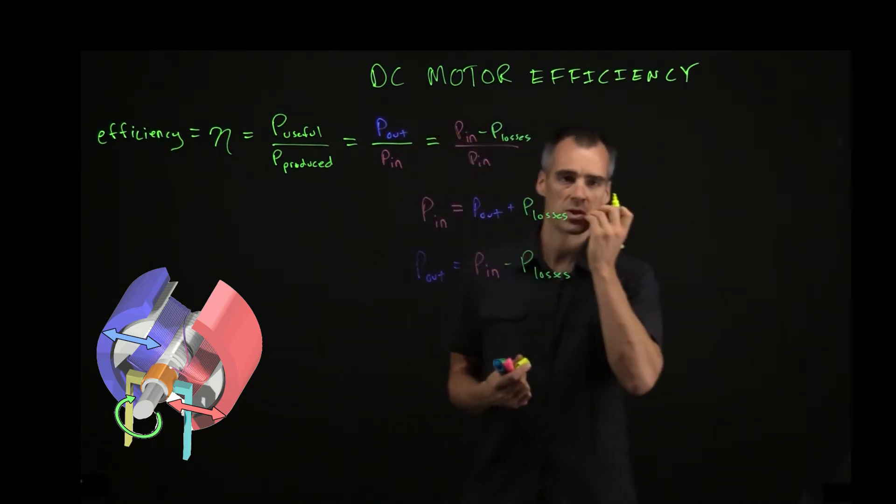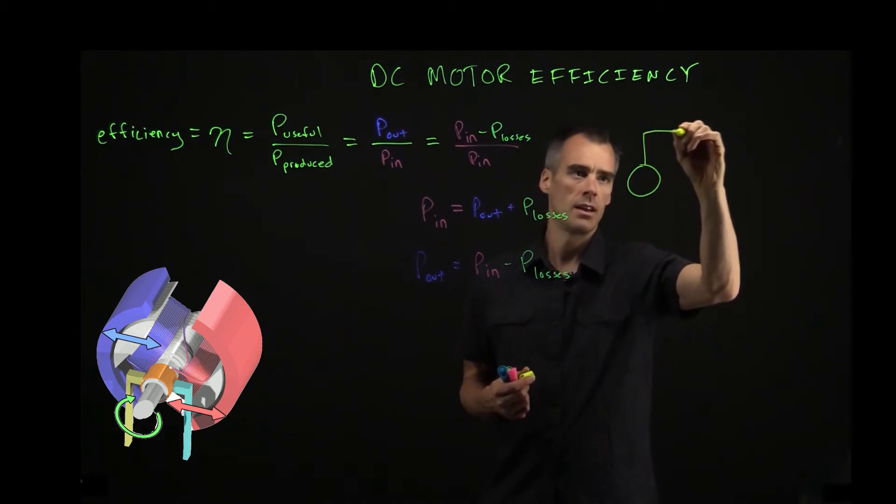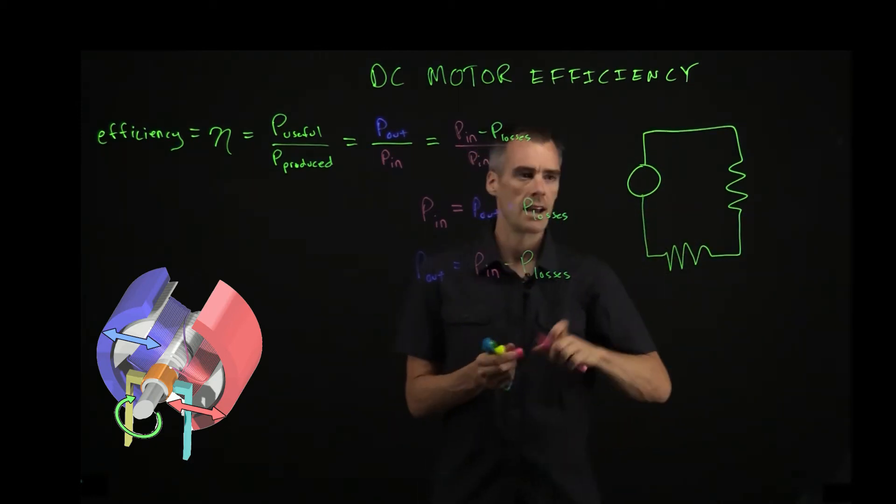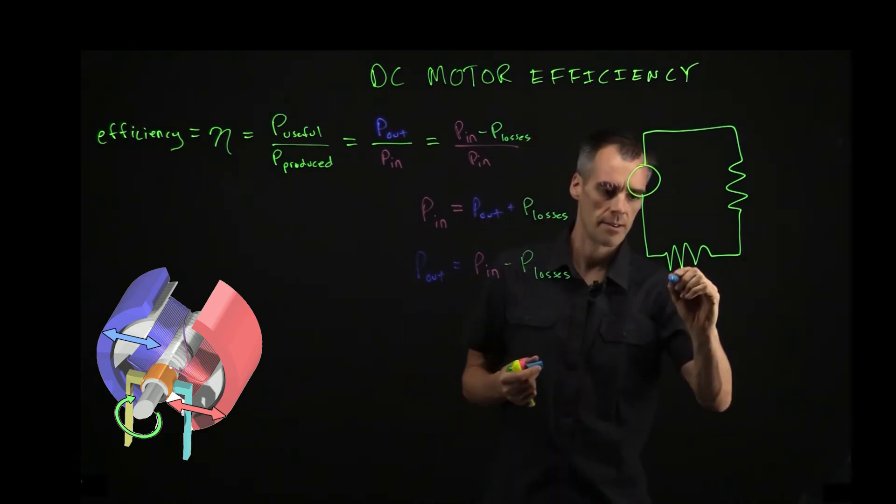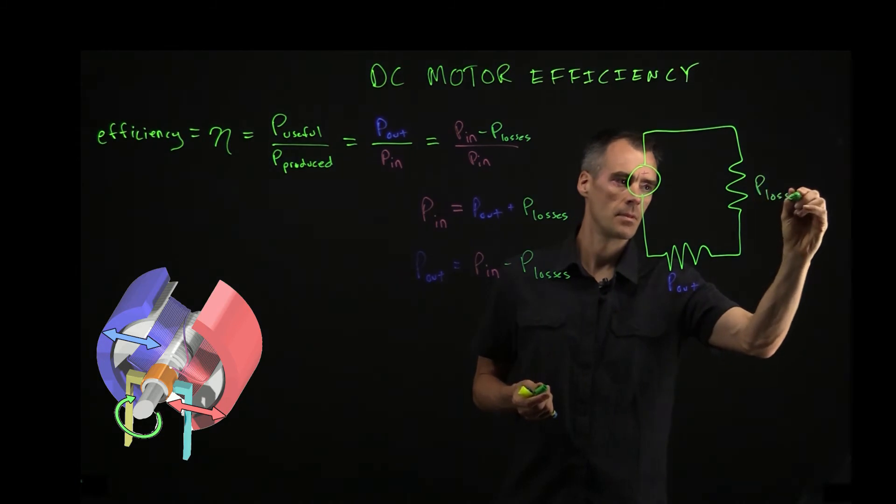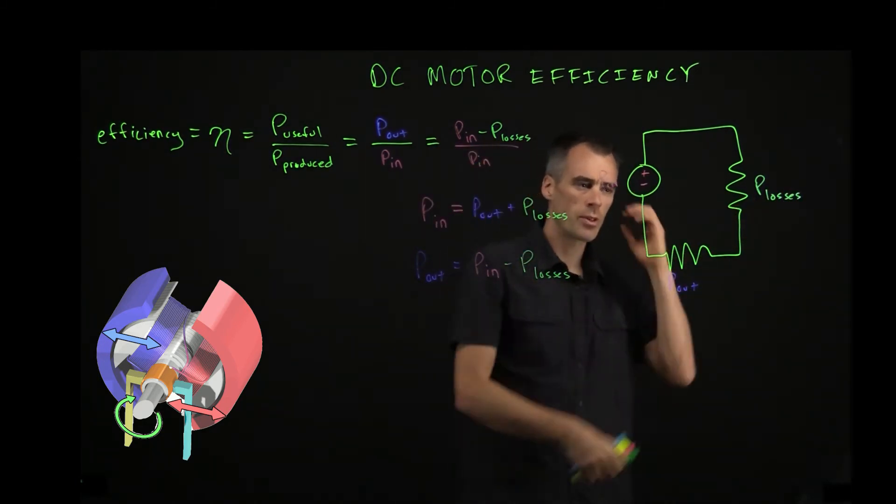So if we want to think of this sort of in terms of a circuit, we might have something like this where we have our power in over here, and say we've got these two resistors, and we'll call this our power in. And we're going to have our power out and we're going to have our power lost. So the key to finding this efficiency, if you know the power in, is you've got to find out where the power loss is coming from.